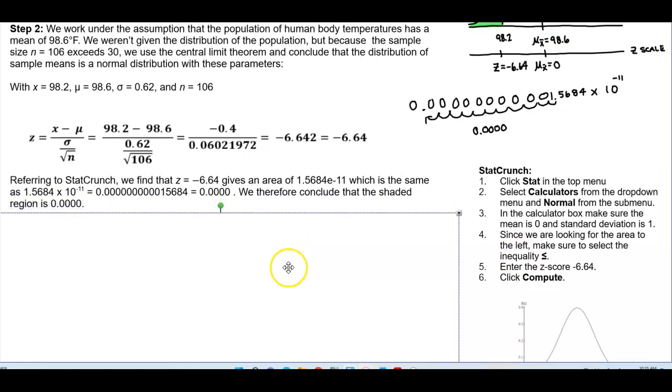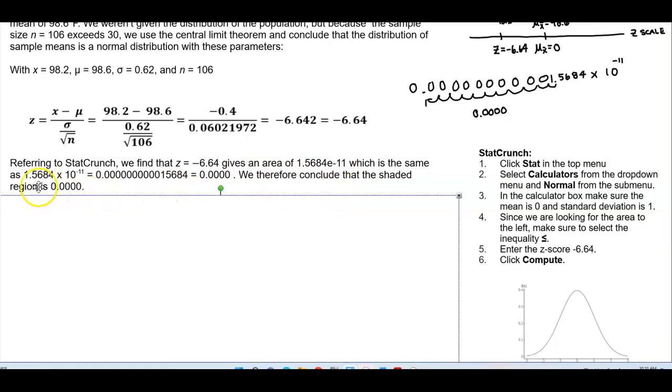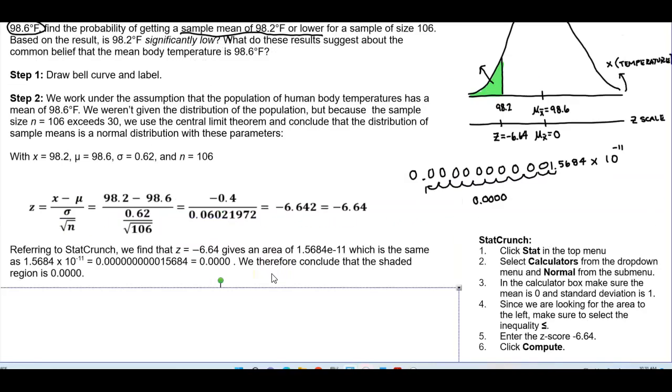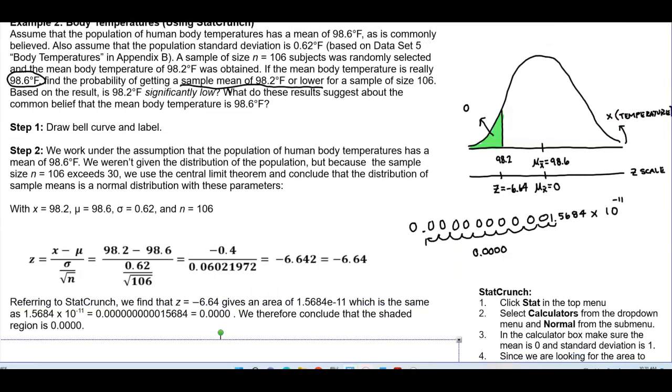So, referring to StatCrunch, we find that Z is equal to negative 6.64, which gives us an area of 1.5684e to the negative 11, which is the same as 1.5684 times 10 to the negative 11th, which gives us the following result. And rounding it to four decimal places, we would conclude that the shaded region is 0.0000. So this, therefore, is now 0.0000.